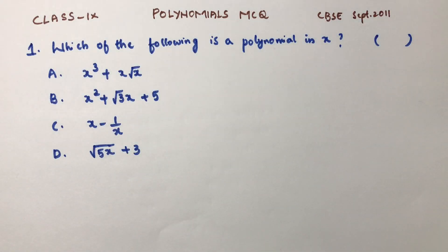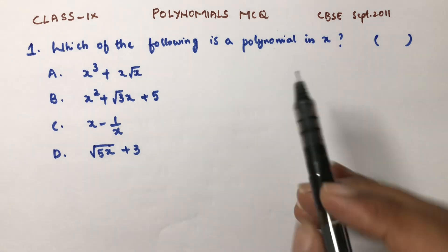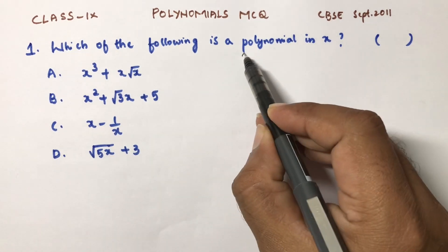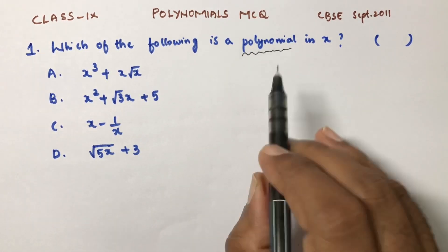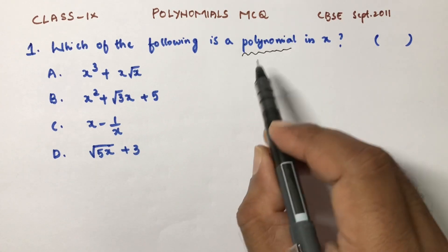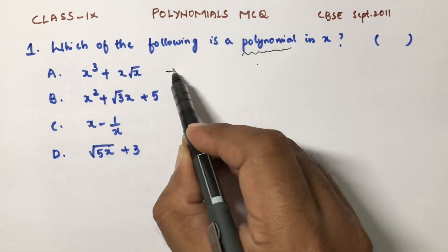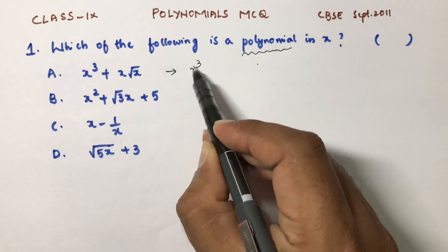Class 9 multiple choice questions from Polynomials. The first question is: which of the following is a polynomial in x? The polynomial definition is: it is an algebraic expression in which the power of a variable is a whole number. Now check here — the variable is x cube.